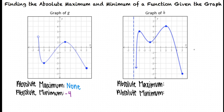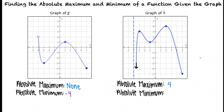Now try to find the absolute maximum and minimum of the graph of h. It looks like the point (2, 4) has the greatest y-coordinate on the graph, so the absolute maximum is 4. On the left end of the graph, there is an arrow that points downward. This means that the y-coordinates will get smaller and smaller, approaching negative infinity, so there is no absolute minimum.